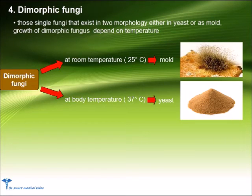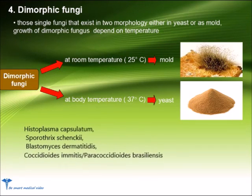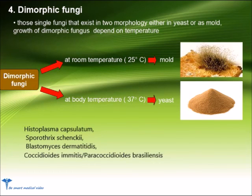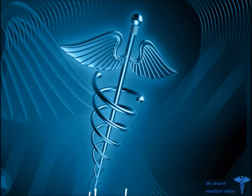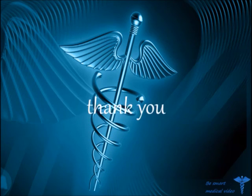Some important dimorphic fungi are: Histoplasma capsulatum, Sporothrix schenckii, Blastomyces dermatitidis, Coccidioides immitis, and Paracoccidioides brasiliensis. This is all about fungi. Thank you for watching.